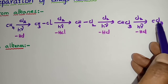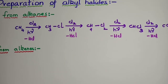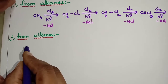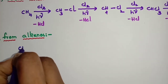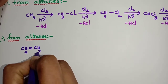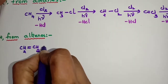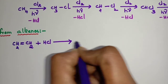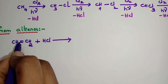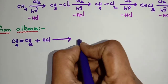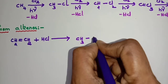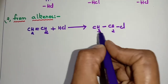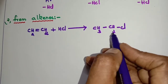So this is the first method of preparation of alkyl halides, that is from alkanes. The second method is from alkenes — kindly put the side heading: from alkenes. Let me take the alkene CH2=CH2. What is this called? Ethylene. Ethylene plus HCl: one pi bond breaks up, hydrogen and chlorine add across the double bond, giving CH3CH2Cl, which is ethyl chloride. Kindly write the name of the compound.